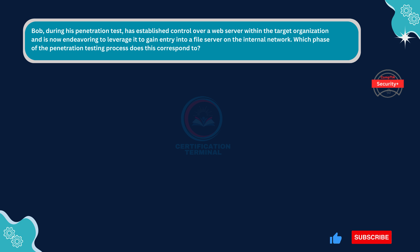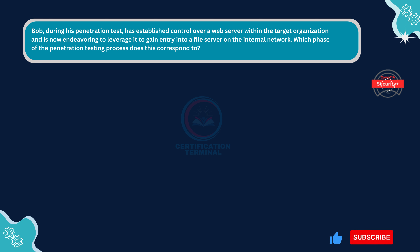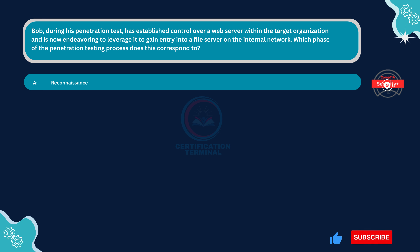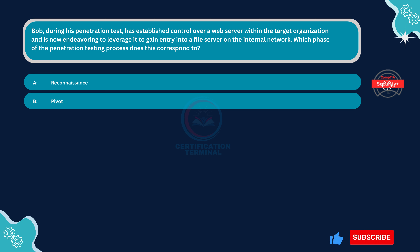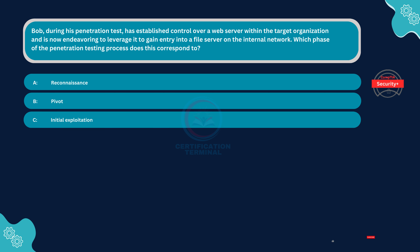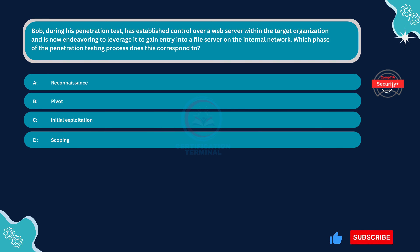Next question. Bob, during his penetration test, has established control over a web server within the target organization and is now endeavoring to leverage it to gain entry into a file server on the internal network. Which phase of the penetration testing process does this correspond to? Option A, reconnaissance. Option B, pivot. Option C, initial exploitation. Option D, scoping.